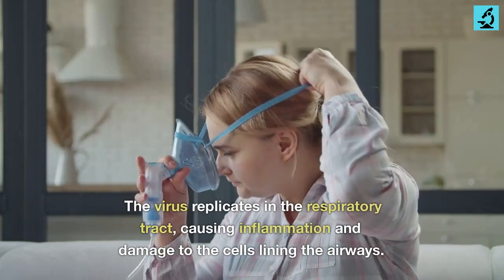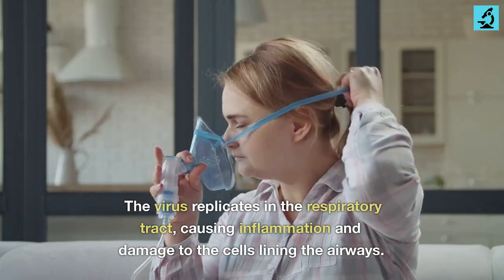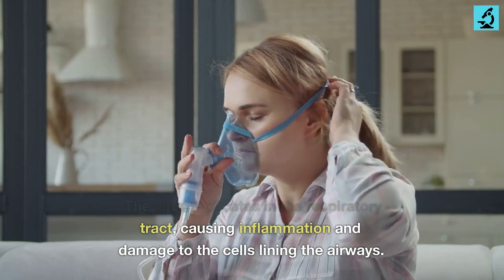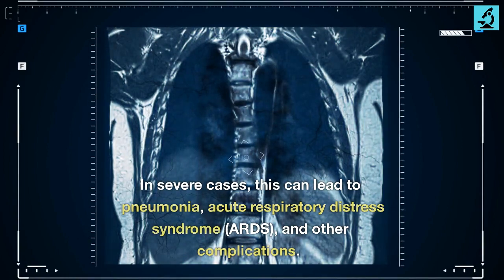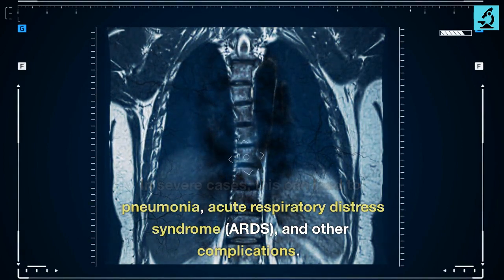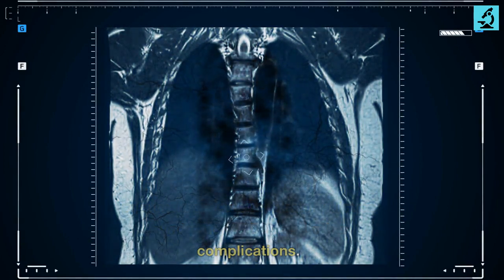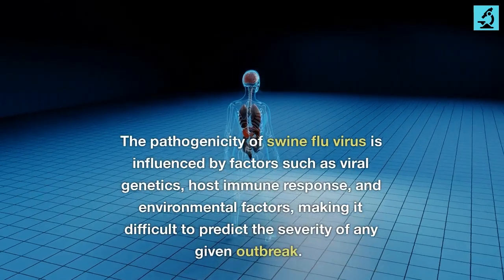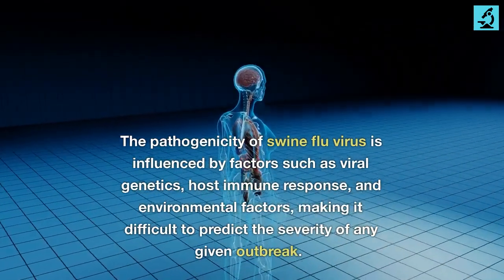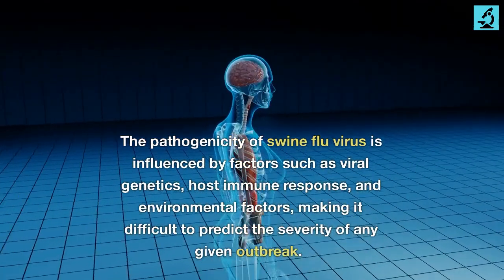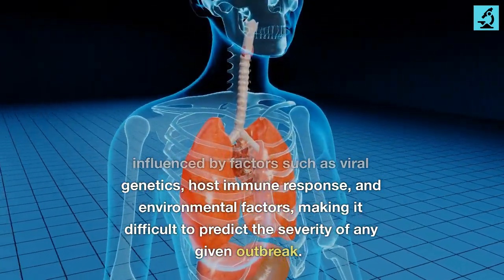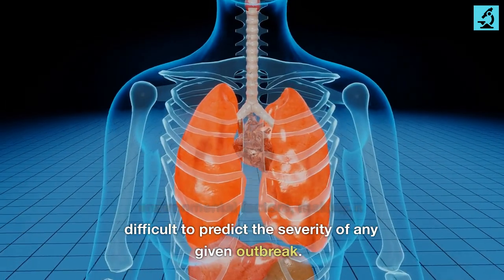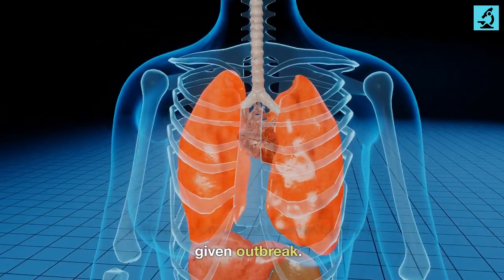The virus replicates in the respiratory tract, causing inflammation and damage to the cells lining the airways. In severe cases, this can lead to pneumonia, acute respiratory distress syndrome (ARDS), and other complications. The pathogenicity of swine flu virus is influenced by factors such as viral genetics, host immune response, and environmental factors, making it difficult to predict the severity of any given outbreak.